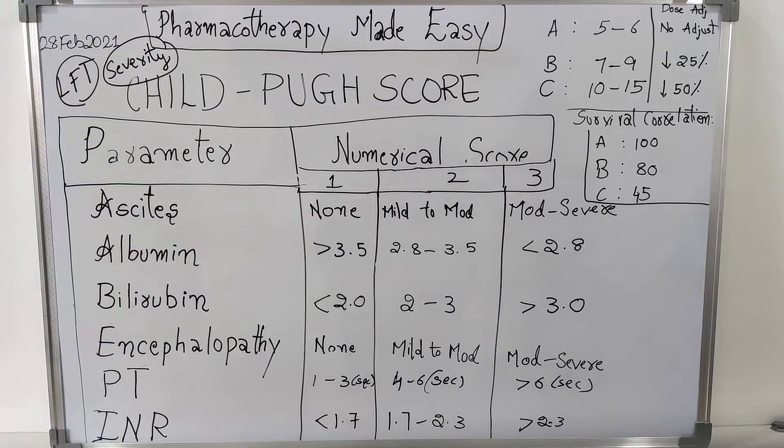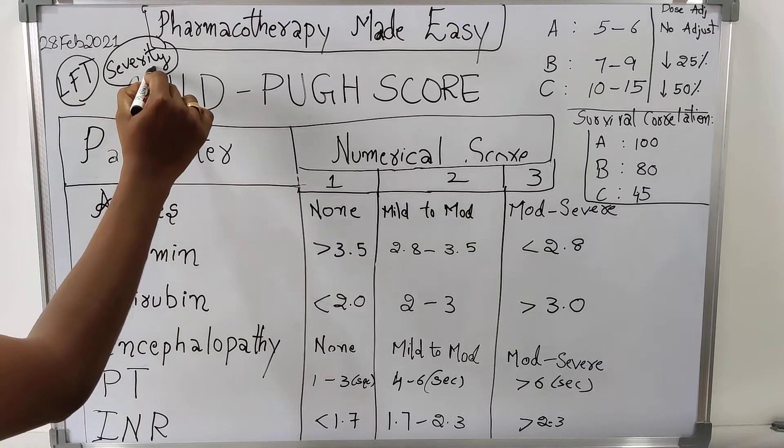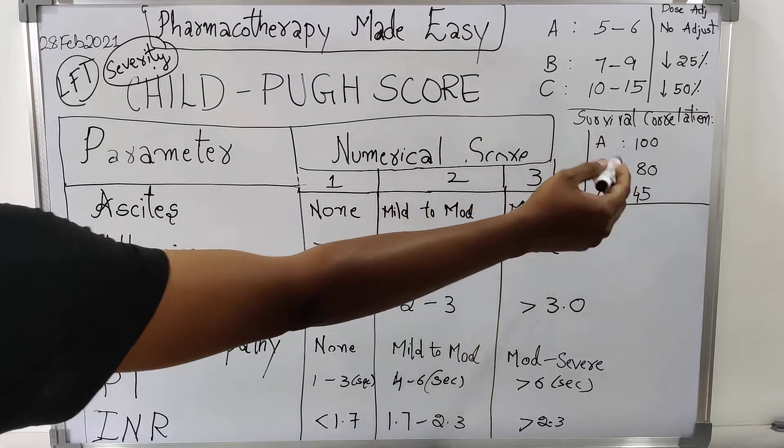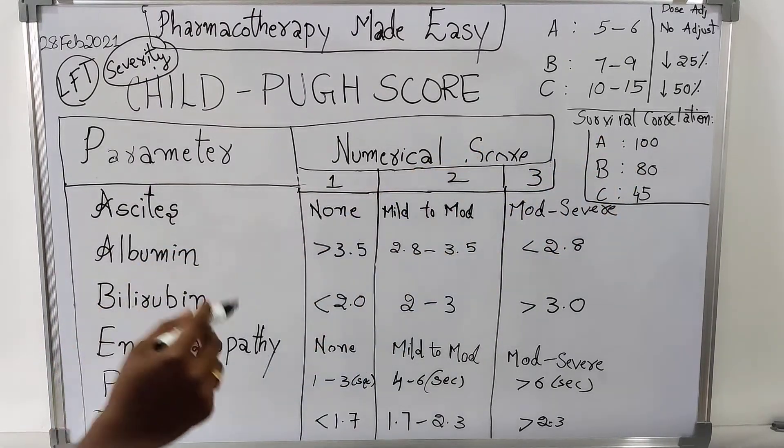What will we be getting if we assess the severity? Based on the assessment of severity, we can expect the survival correlation of the patient for one year or two years.